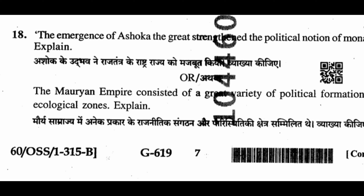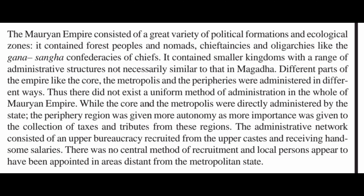Question 18: The emergence of Ashoka the Great transformed the political notion of monarchy. Explain. Question 18 (alternate): The Maurya Empire consisted of a great variety of political formations and ecological zones. Explain. The Maurya Empire contained forest people and nomads, chieftainships and oligarchies like the Gana Sanghas. It contained smaller kingdoms with a range of administrative structures not necessarily similar to that in Magadha. Different parts of the empire — the core, the metropolis, and the peripheries — were administered in different ways. There did not exist a uniform method of administration throughout the Maurya Empire. While the core and metropolis were directly administered by the state, the peripheral regions were given more autonomy, with more importance given to the collection of taxes and tributes.